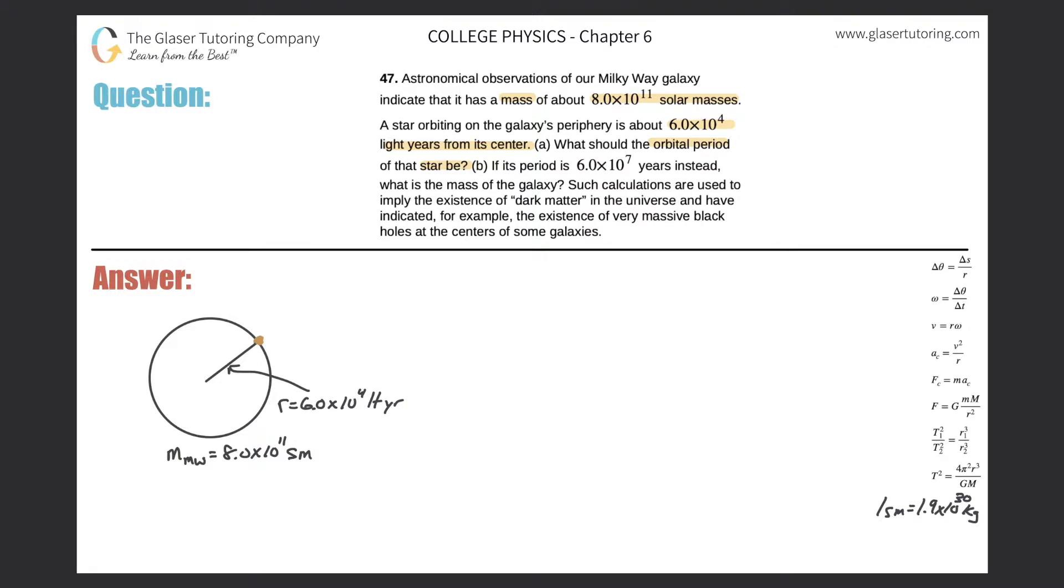Alright. So first, let's take a look at this formula down here on the bottom right. That formula says that the period of a satellite orbiting a parent system squared should be equal to 4 times pi squared multiplied by the radius between the satellite and that parent system cubed, divided by the gravitational constant multiplied by the mass of the parent system.